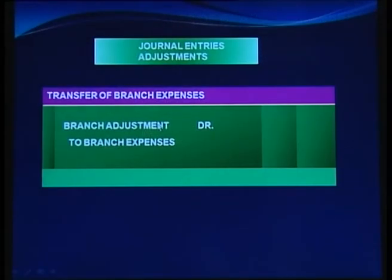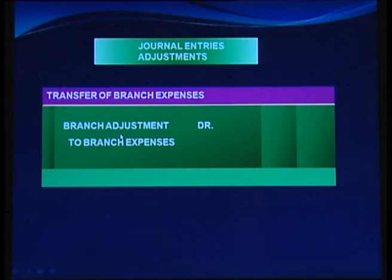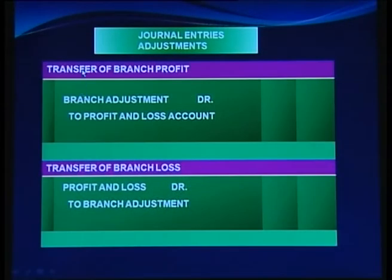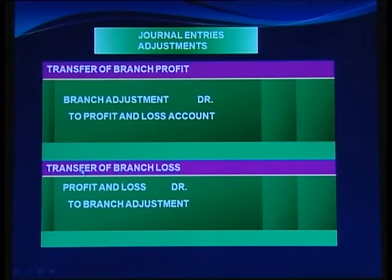For transfer of branch expenses: Branch Adjustment Account debit to Branch Expenses. This brings together the loading on goods sent to branch, opening stock loading, closing stock loading, and branch expenses, from which the profit or loss is derived. For transfer of branch profit: Branch Adjustment debit to Profit and Loss. When there is a loss, the reverse entry is passed — Profit and Loss Account debit to Branch Adjustment.